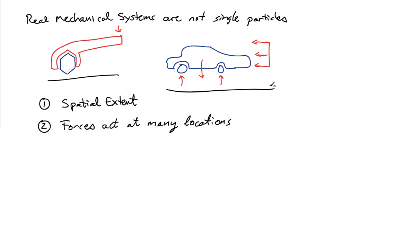What distinguishes these systems from a particle is, number one, that they have spatial extent — they are not just at a single point in space — and also that forces are applied at many different locations. The car is the primary example, where you have forces at the tires and at the center of gravity.